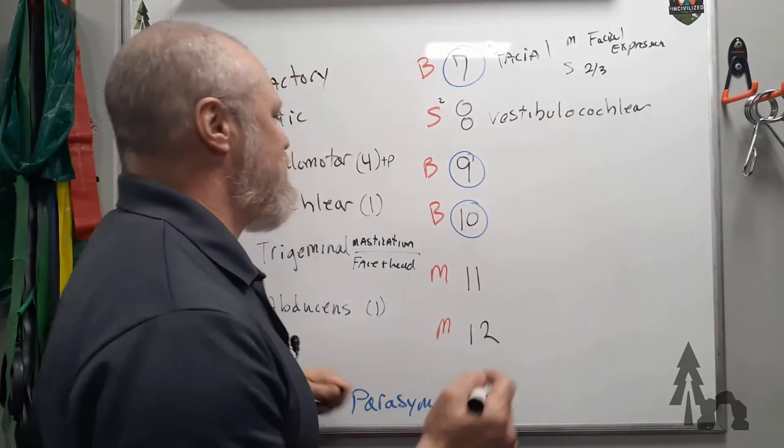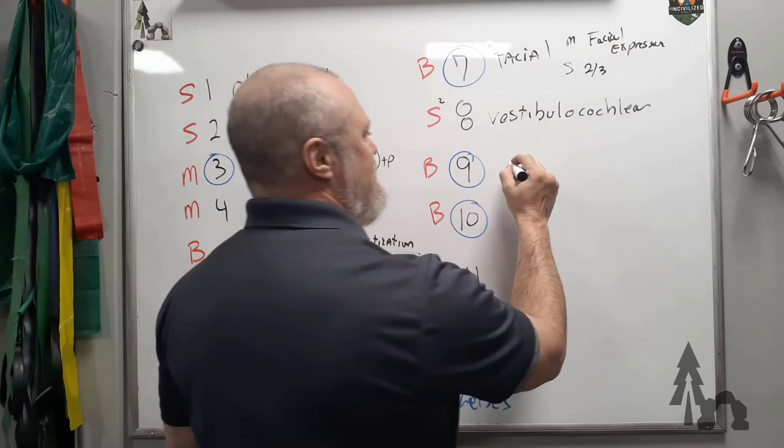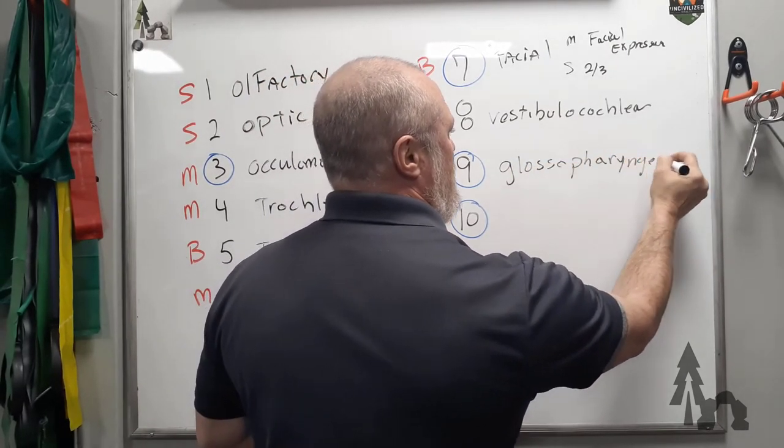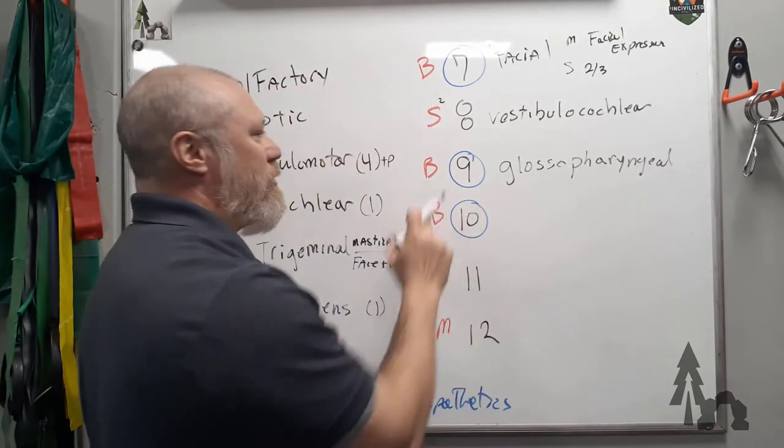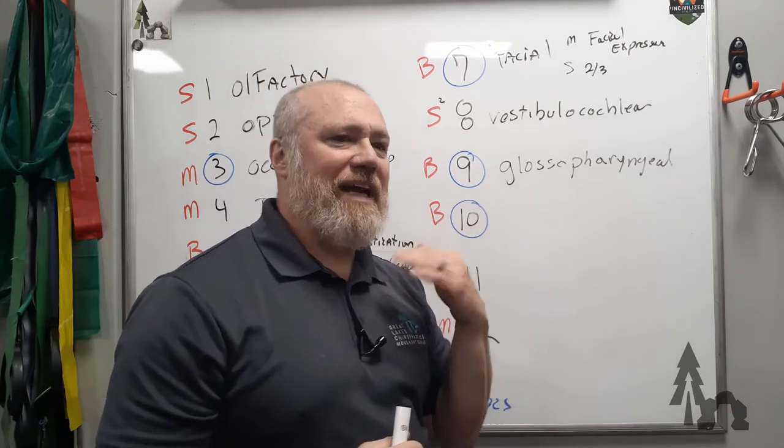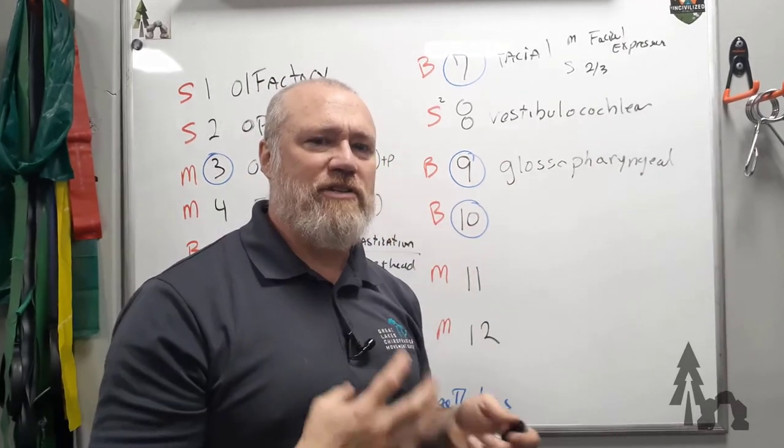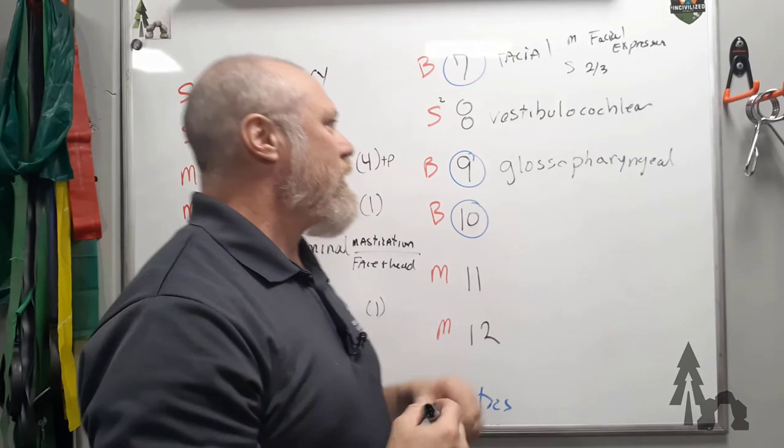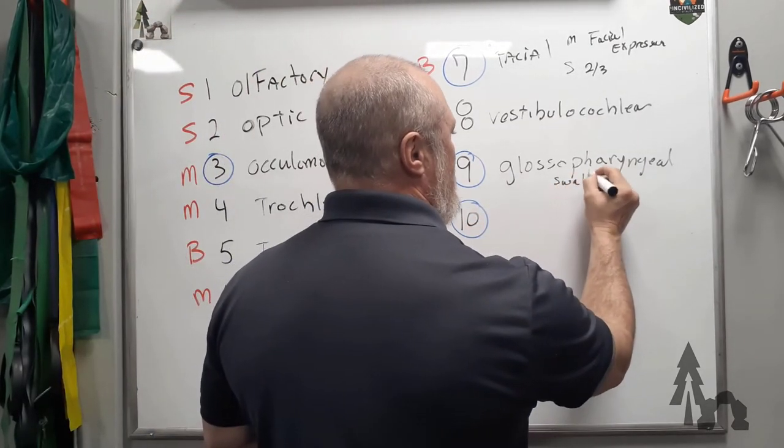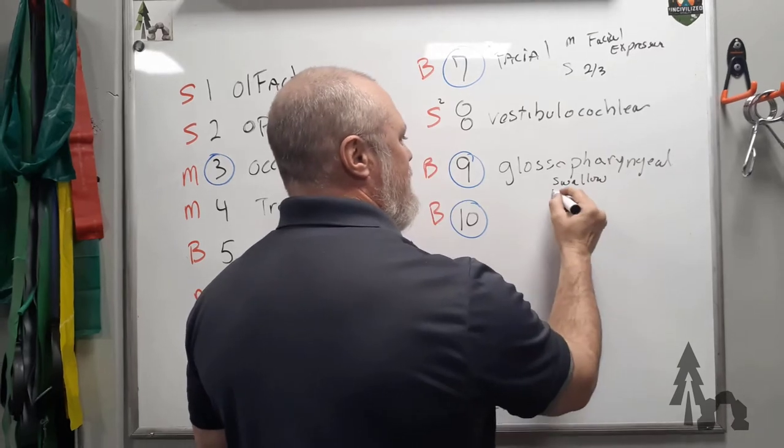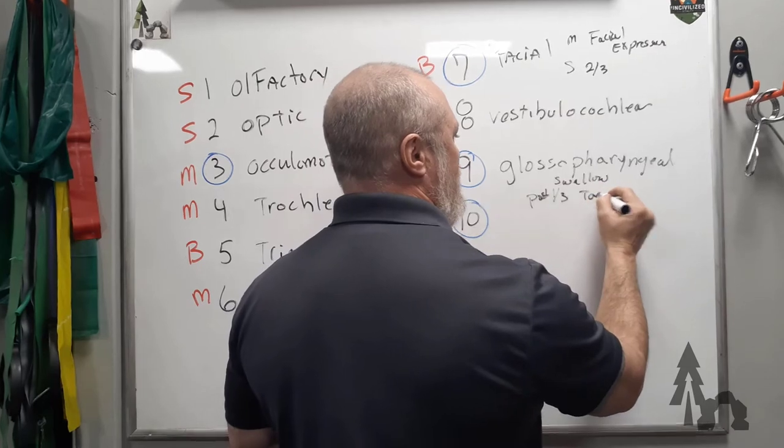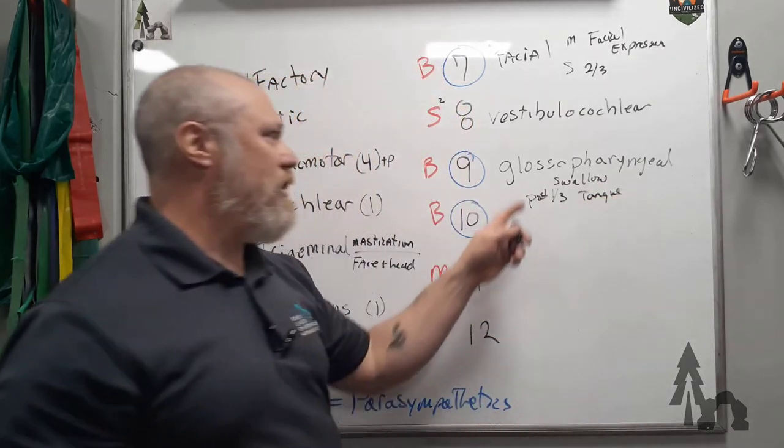Nine is the glossopharyngeal nerve, which is both sensory and motor. The motor muscles come out to help you swallow, sort of raises the back of your throat—some of the pharyngeal muscles to help you swallow. And its sensation is going to be also in that area, the posterior third of your tongue.